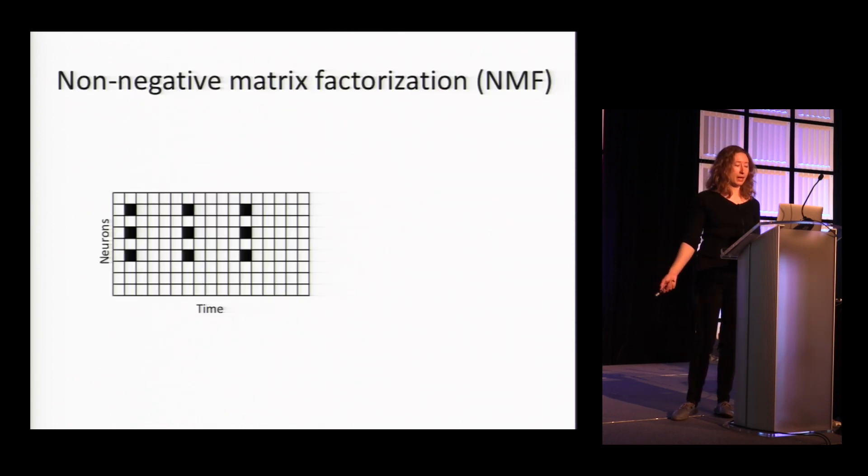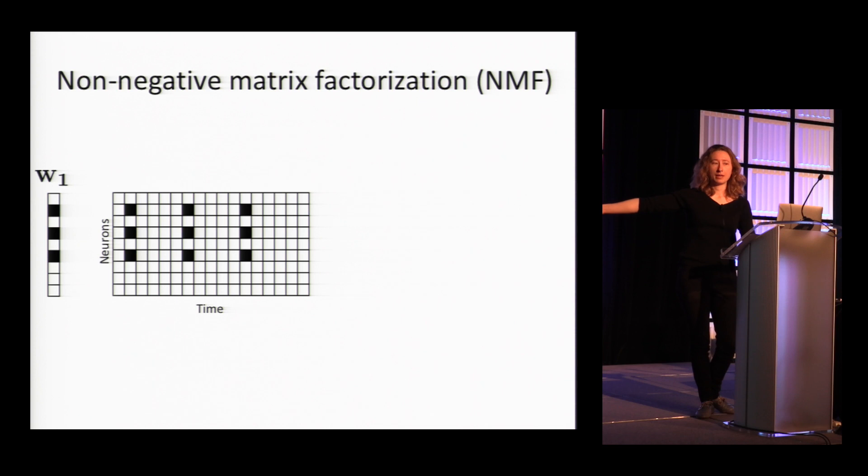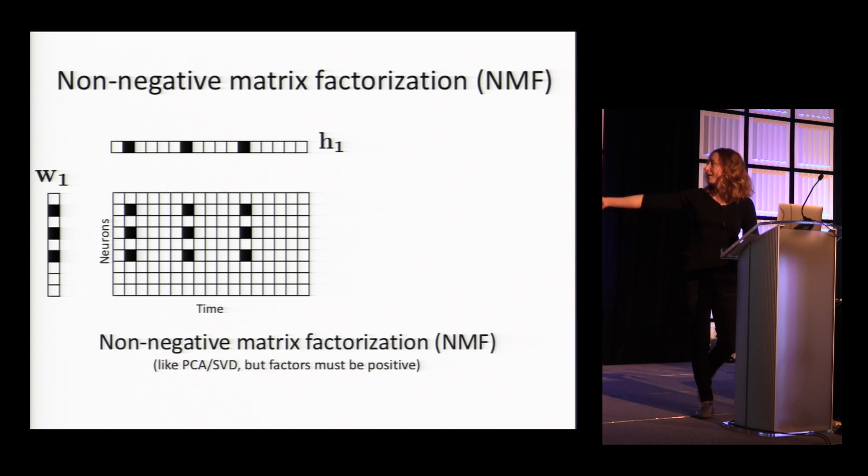First, I'm going to explain non-negative matrix factorization. In this case, we have recordings of n neurons at t time points. We want to identify synchronous patterns of activity. So find repeating patterns W and the times at which these patterns occur to decompose this entire matrix. One other thing to mention is that it's similar to PCA or SVD, it's just forced to be that everything needs to be positive.